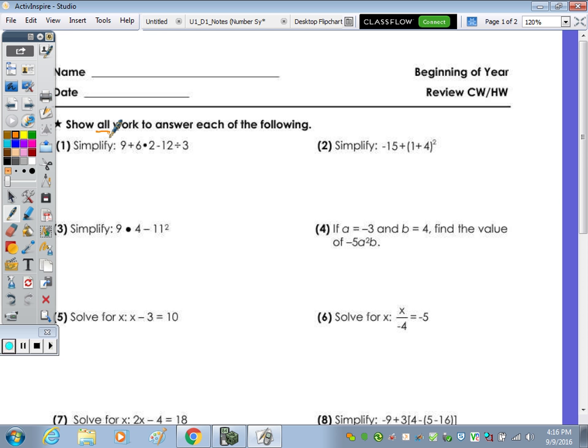First question says to simplify. That expression is a numerical expression in which we use the order of operations. Some of your teachers may have shown you Please Excuse My Dear Aunt Sally or PEMDAS. That stands for your parentheses, exponents, multiplication, division, addition, subtraction. In these operations you do left to right. So number one, we don't have any parentheses or exponents, but we do have multiplication and division. So this is 9 + 12 - 4. Combining those left to right, 9 + 12 is 21, 21 - 4 is 17.